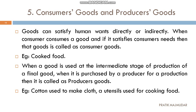Producer goods are those where there is no direct consumption of the product — there is an intermediate stage in between. For example, you use utensils to make a particular food; the utensils represent an intermediate stage, and afterwards you get the consumer goods.